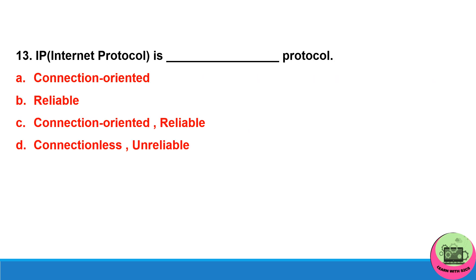Question 13: IP is which type of protocol? Connection-oriented? No. Reliable? No. Connection-oriented and reliable? No. The answer will be connectionless and unreliable — there is no guarantee of delivery of packets.